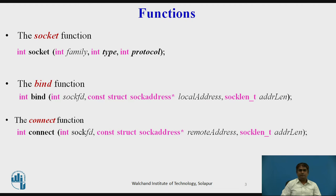The first function is the socket function. The operating system does not create a socket until instructed by the process. The process needs to use a socket function call to create a socket. The prototype is shown here. A call to this function creates a socket with only three fields in the socket structure: Family, Type, and Protocol. If the call is successful, the function returns a unique socket descriptor socfd, which is a non-negative integer that can be used to refer to the socket in other calls. If the call is not successful, the operating system returns minus one.